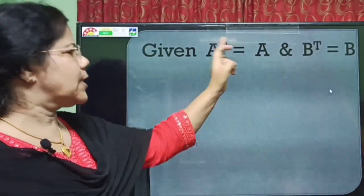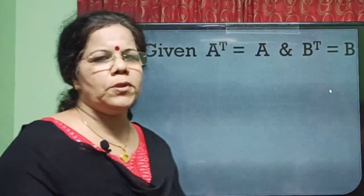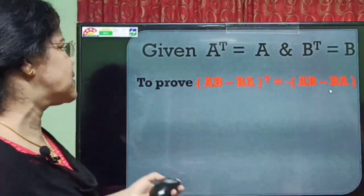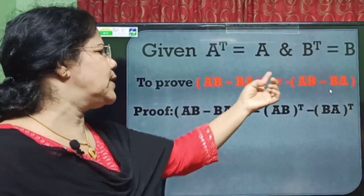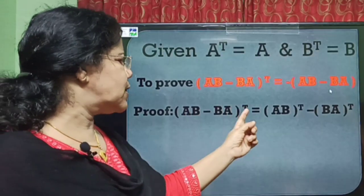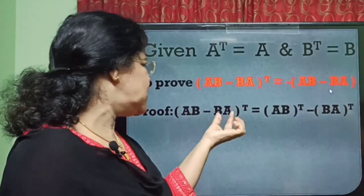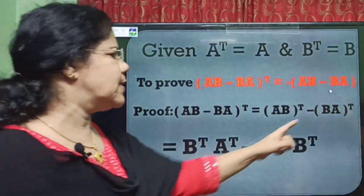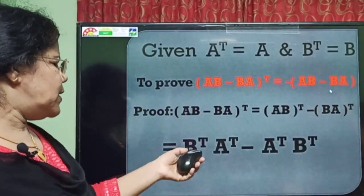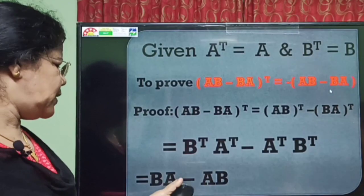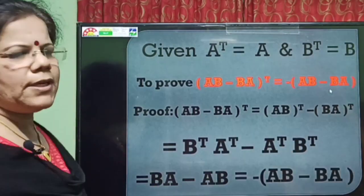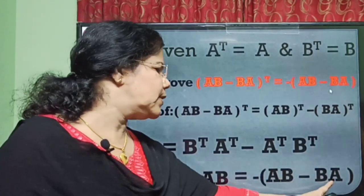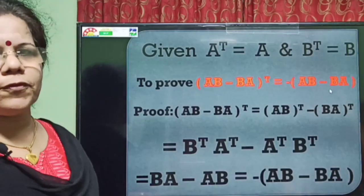Given A and B are symmetric, so A-transpose equals A and B-transpose equals B. Starting from AB minus BA whole transpose, by property it equals AB-transpose minus BA-transpose. Using the last property, AB-transpose equals B-transpose·A-transpose and BA-transpose equals A-transpose·B-transpose. Substituting, this equals B·A minus A·B, which can be written as negative of A·B minus B·A. Thus AB minus BA is skew-symmetric — a very simple proof.